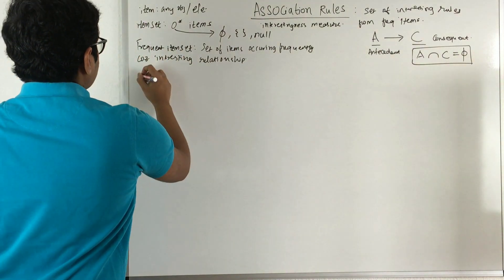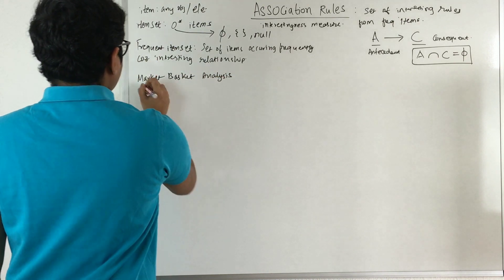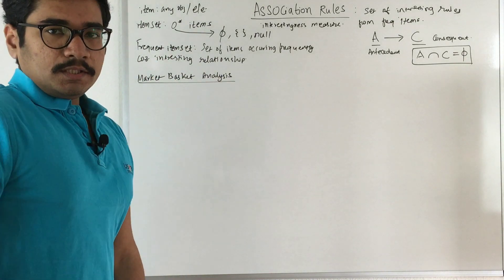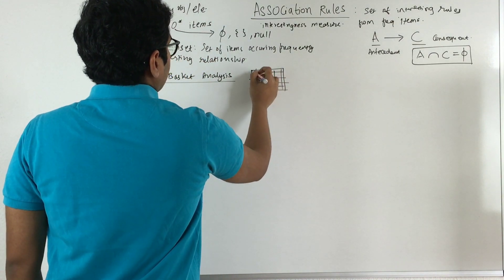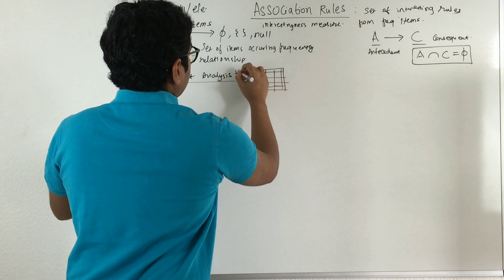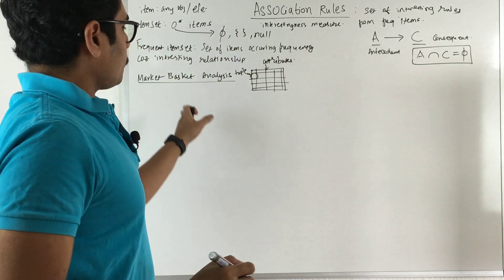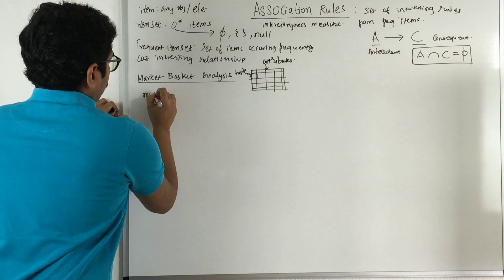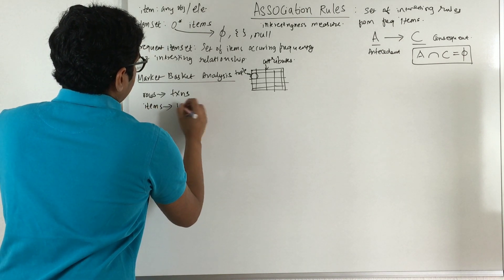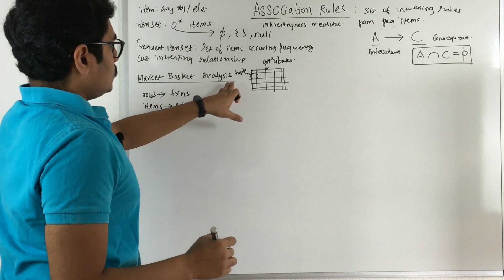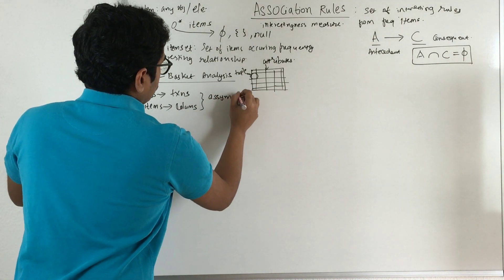Now let's understand market basket analysis. In a relational DBMS, you have rows and columns — rows are called tuples and columns are called attributes. But when dealing with association rules or frequent item set mining, the rows are called transactions and the columns are called items. You can also represent this as a symmetric binary variable.